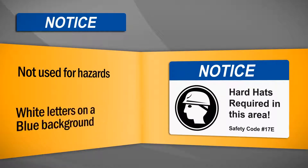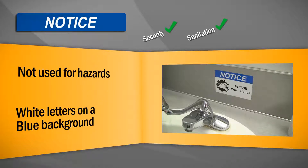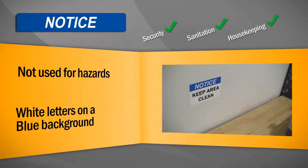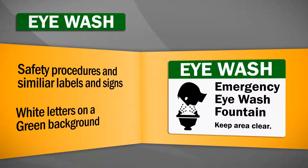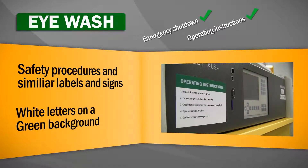Notice is not used for hazards. This signal word is used to convey security, sanitation, or housekeeping rules. General safety signal words are reserved for safety procedures and similar labels and signs, and each should be worded for specific applications such as emergency shutdown procedure or operating instructions.